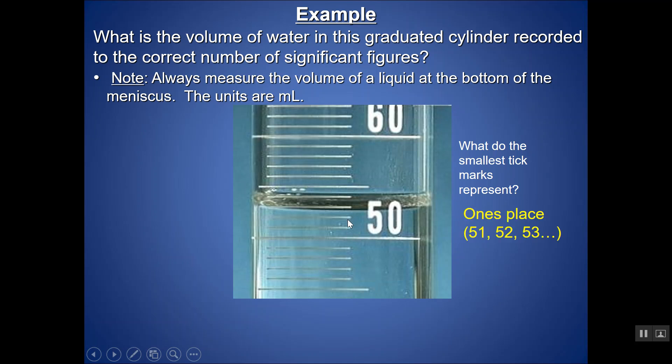We can all agree that this meniscus of water falls somewhere between the 52 milliliters and 53 milliliters. So we can all agree there's at least 52 milliliters of water in this graduated cylinder.